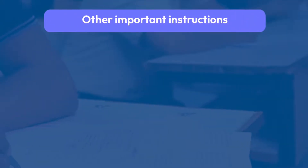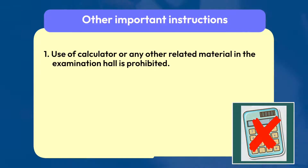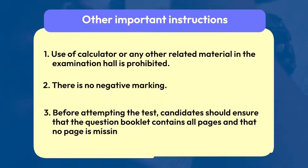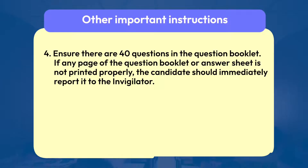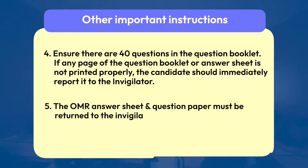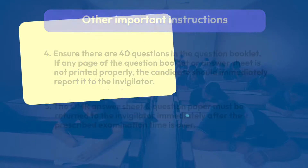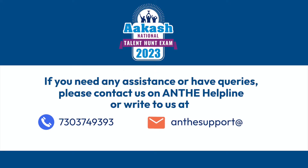Other important instructions: Use of a calculator or any other related material in the examination hall is prohibited. There is no negative marking. Before attempting the test, candidates should ensure that the question booklet contains all pages and that no page is missing. Ensure there are 40 questions in the question booklet. If any page of the question booklet or answer sheet is not printed properly, the candidate should immediately report it to the invigilator. The OMR answer sheet and question paper must be returned to the invigilator immediately after the prescribed examination time is over. If you need any assistance or have queries, please contact us on the ANTHE helpline 7303-749393 or write to us at anthesupport@aesl.in.